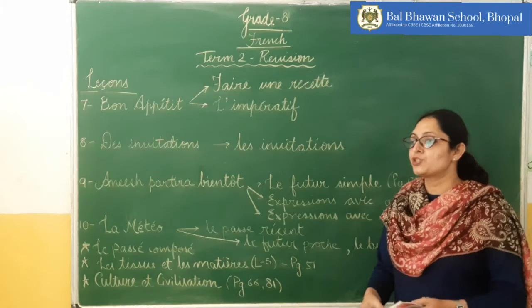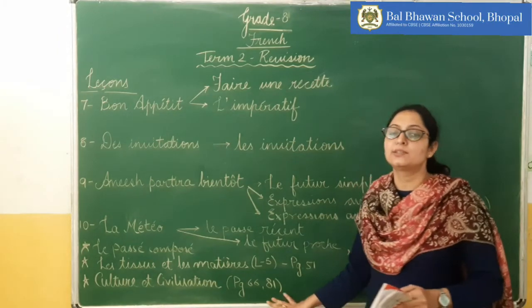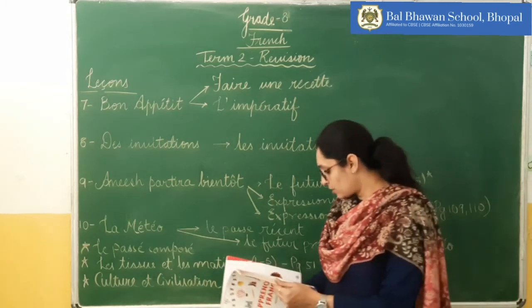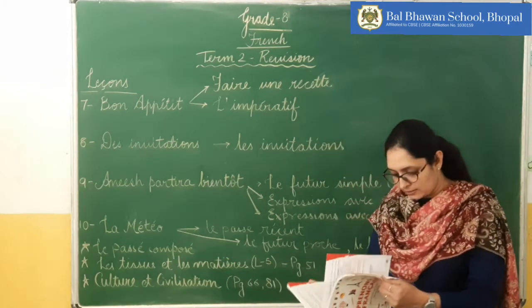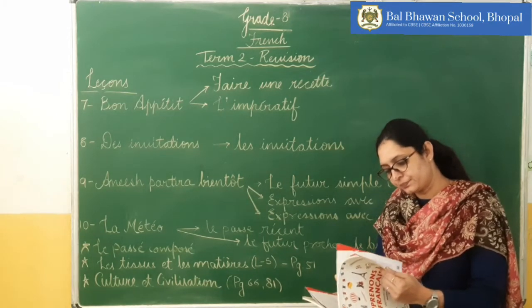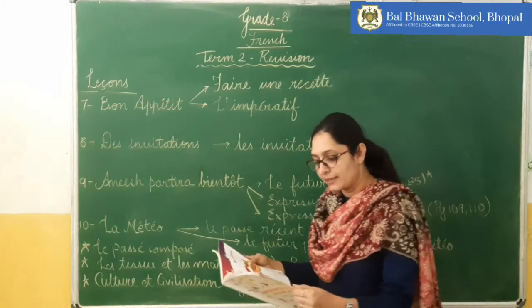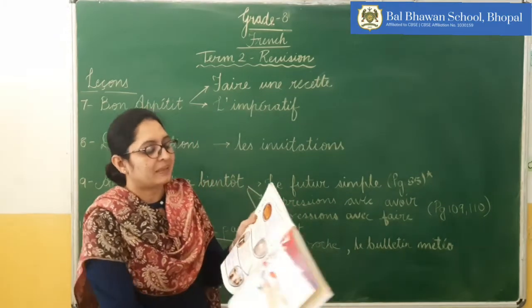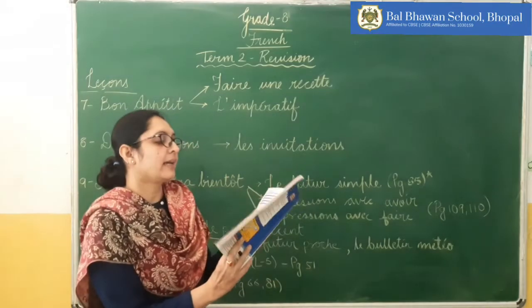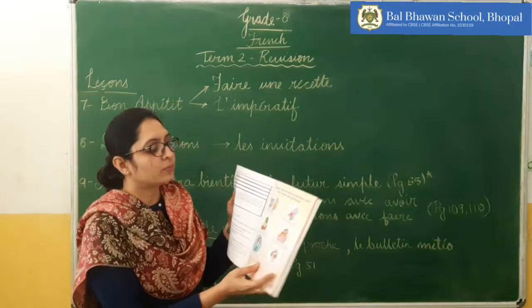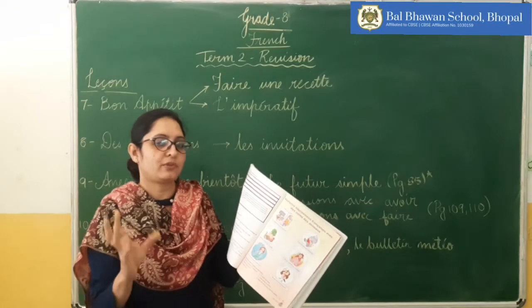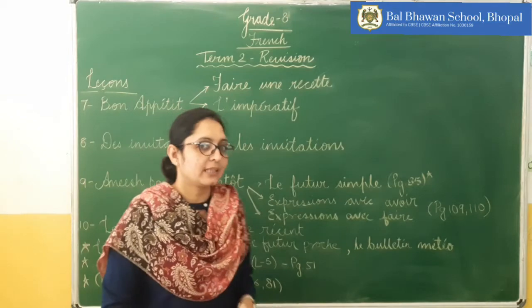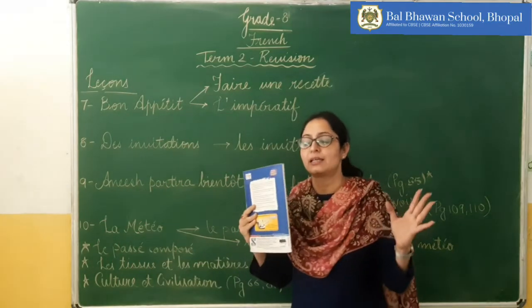The last topic is Culture & Civilization, found on pages 66 and 81. Page 66 covers lesser-known places in Paris. Page 81 covers expressions related to the names of animals. These two pages are coming under Cultural Civilization. I hope the syllabus is clear to all of you.